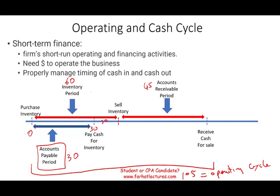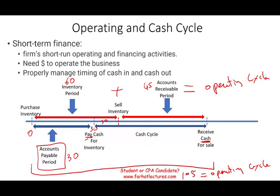So the operating cycle equals the inventory period plus the accounts receivable period — together they give you the operating cycle. Now, at some point you paid cash and at some point you received cash. From the time you paid the cash until the time you received the cash, that's the cash cycle — 30 days plus 45 days equals 75 days.